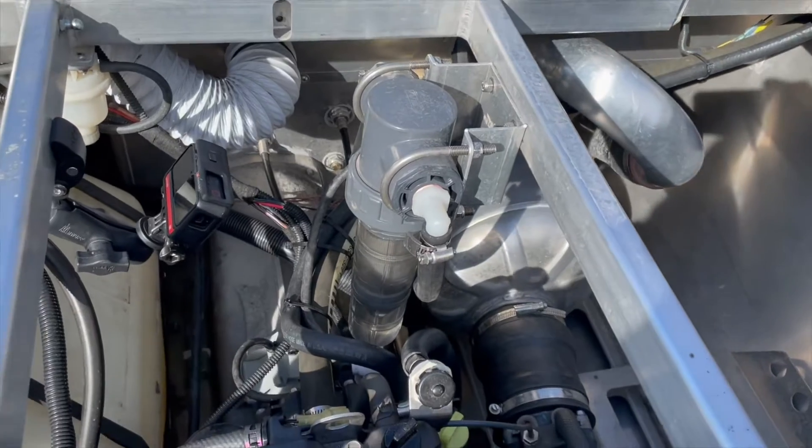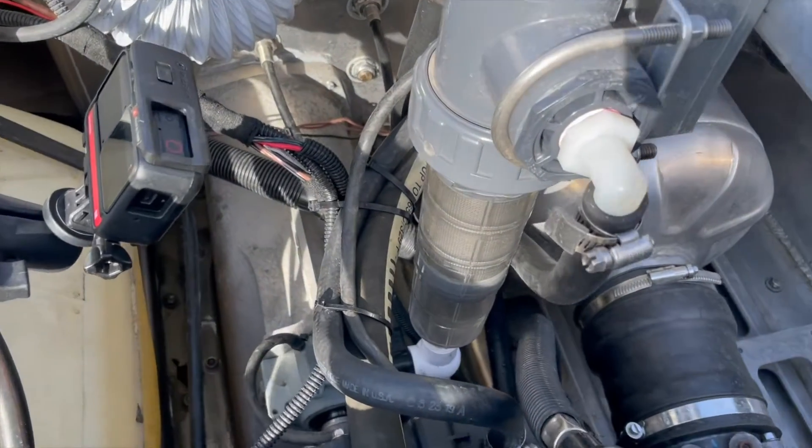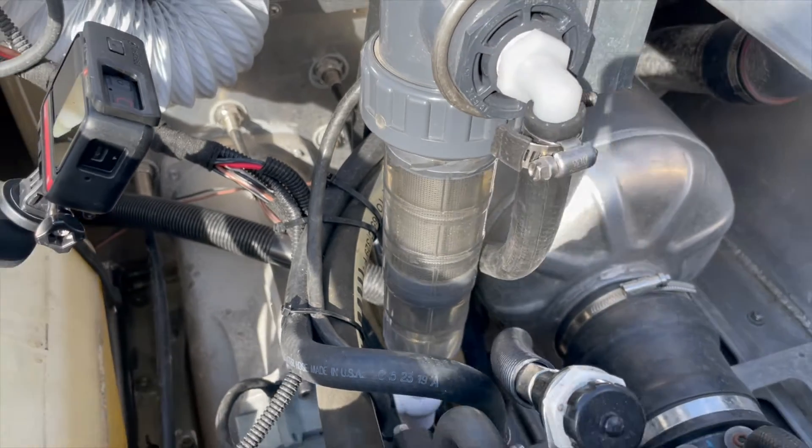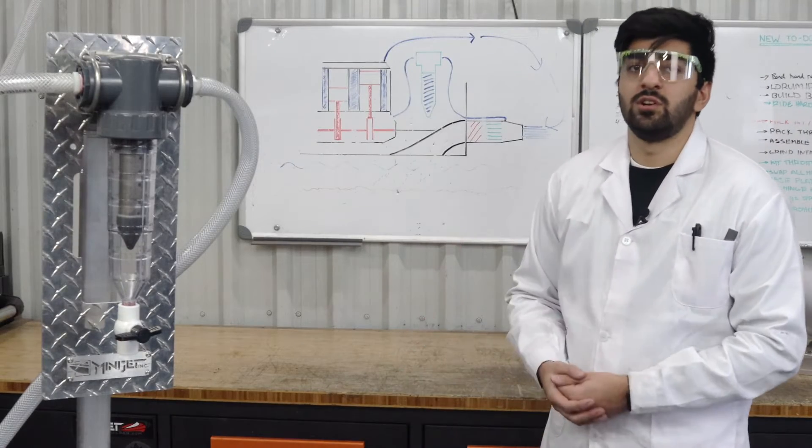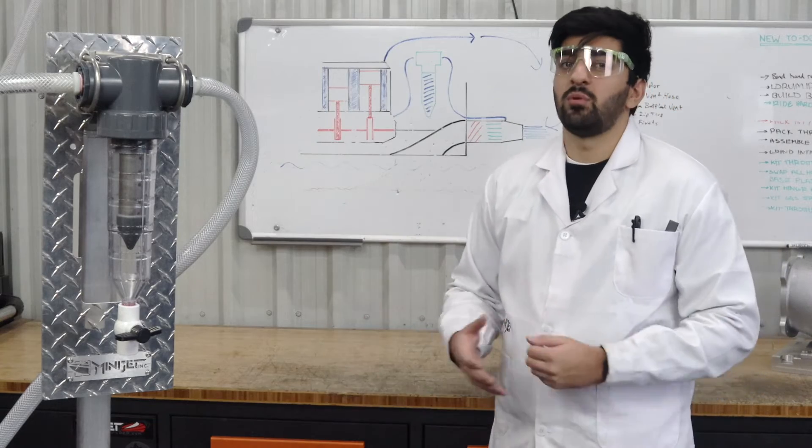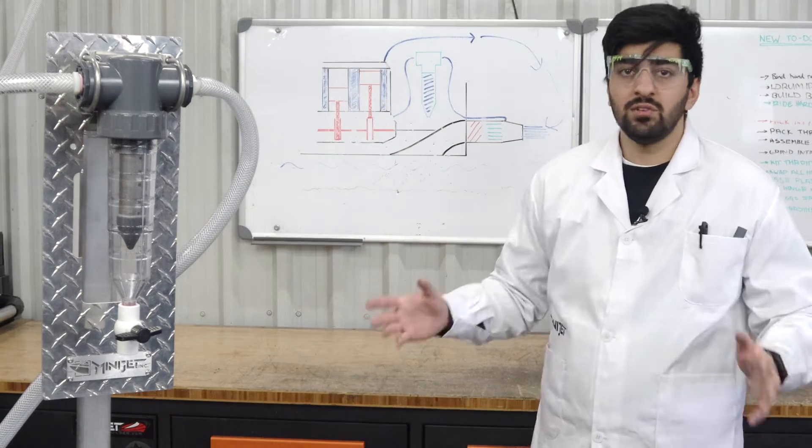Now if we install the sand trap between the pickup on the jet pump and the inlet on the engine, we can filter out the debris before it makes its way into the engine's cooling system, making sure that it gets nice clean water. The sand trap will have to be emptied fairly regularly to ensure it doesn't get backed up. That's a pretty small price to pay to keep your engine running well.